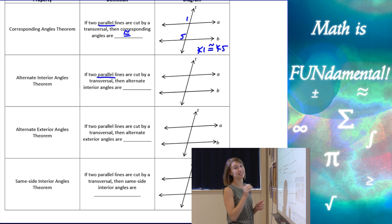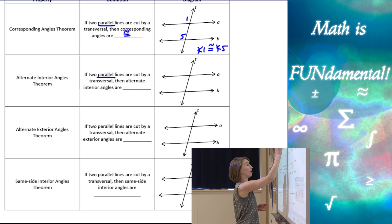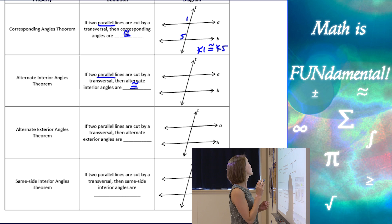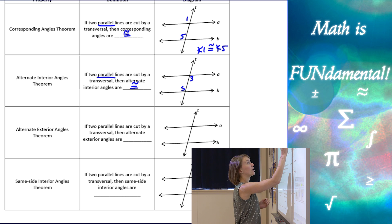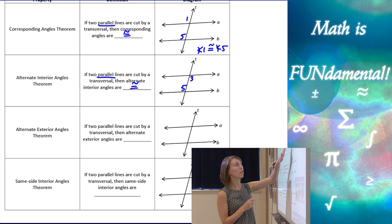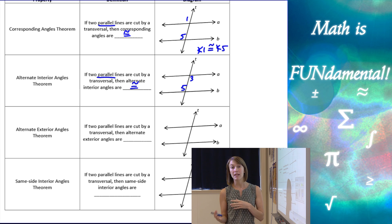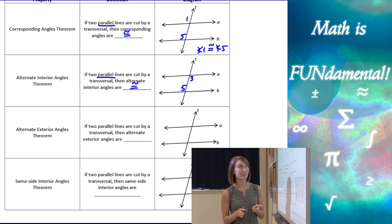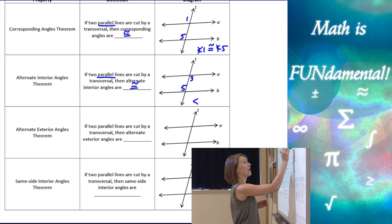Next is the Alternate Interior Angles Theorem, which states if two parallel lines are cut by a transversal, then alternate interior angles are congruent. Let's look at angle three and angle five — those are alternate interior angles. If we look at the size of those angles on the diagram, they both look obtuse, as opposed to one being obtuse and one being acute. So angle three is congruent to angle five by the Alternate Interior Angles Theorem.